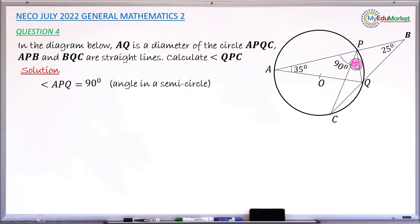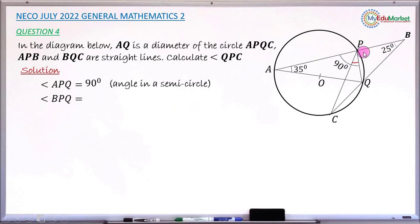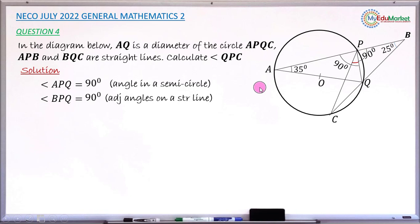I mark 90° there in my drawing. Next, I can find angle BPQ. Together with angle APQ, they form an angle on a straight line. Since APQ is 90°, the remaining angle BPQ is also 90 degrees, because they are angles on a straight line.